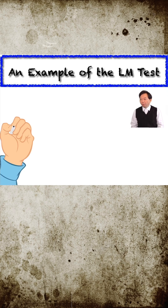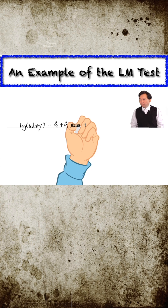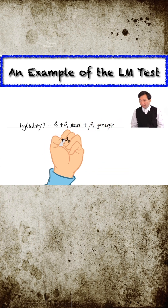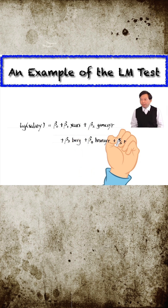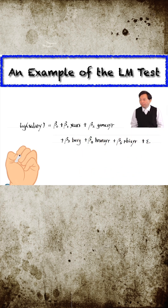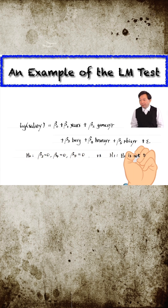Here is an example of baseball players we have used many times before. The model relates the players' salaries to their years in major leagues, the average games played by year, and three performance variables. The null hypothesis is that these three performance variables do not affect salaries once the other two factors have been controlled for — that is to say, beta 3 equals beta 4 equals beta 5 equals 0 in the model.